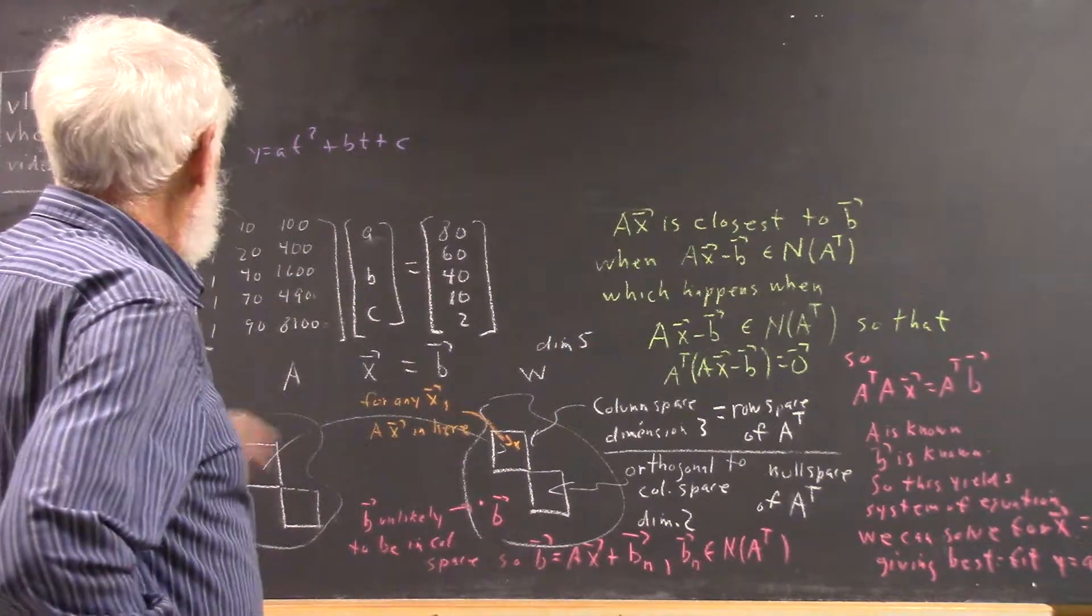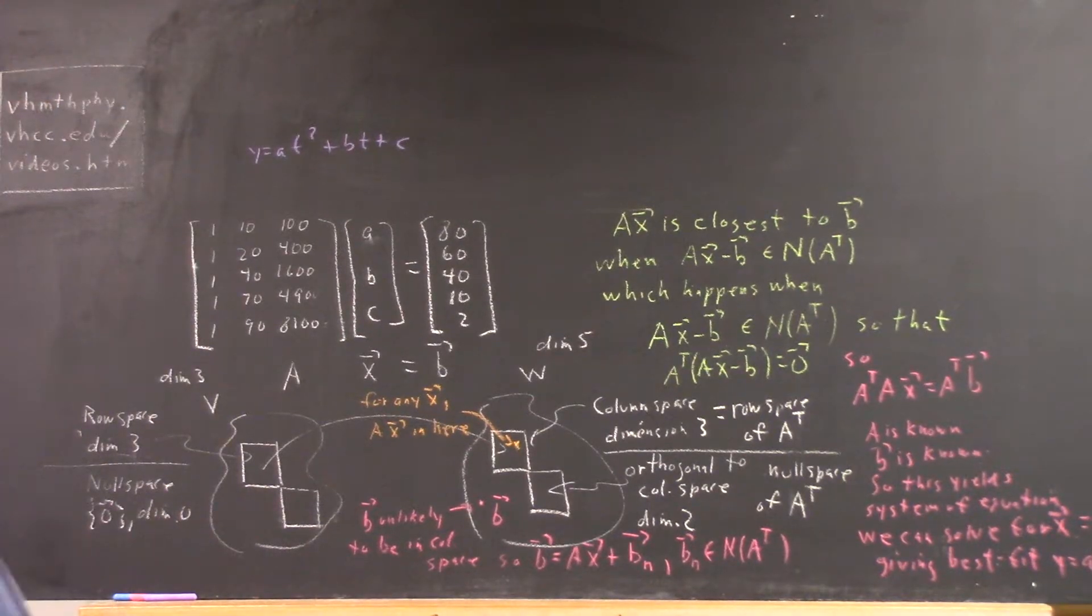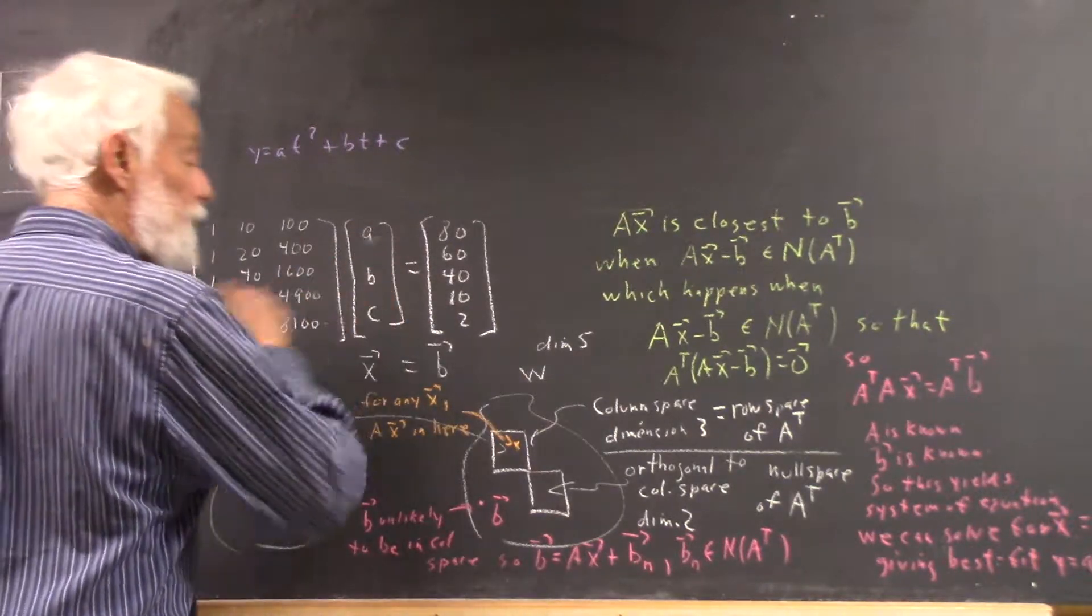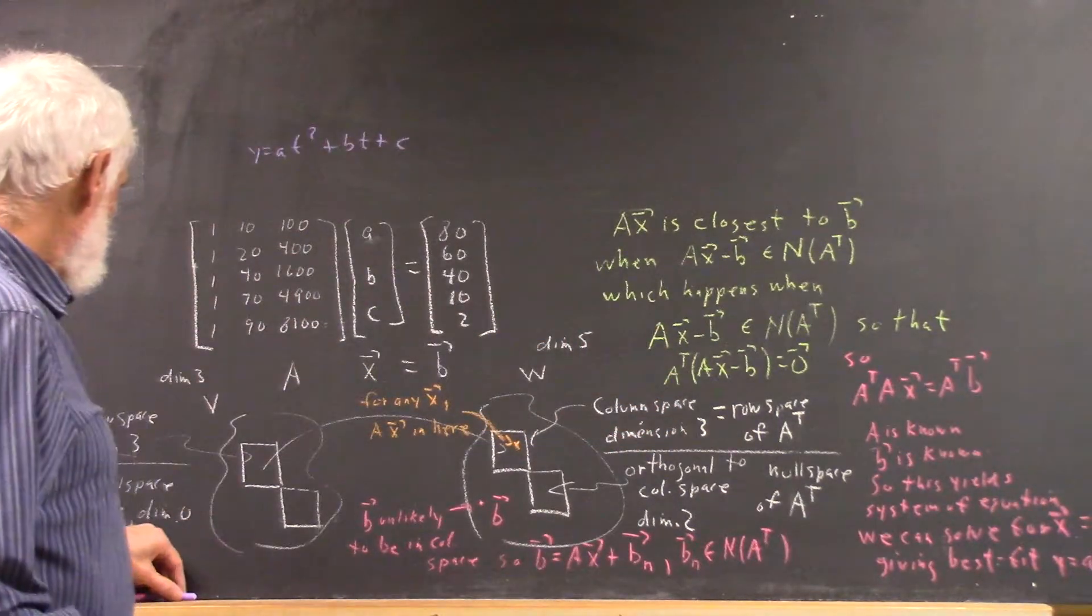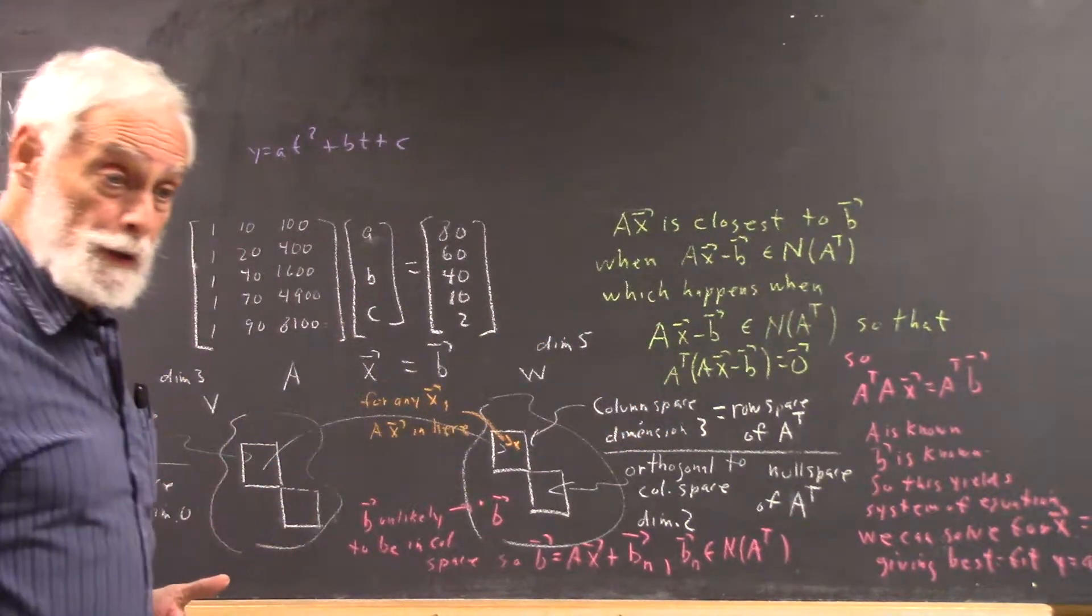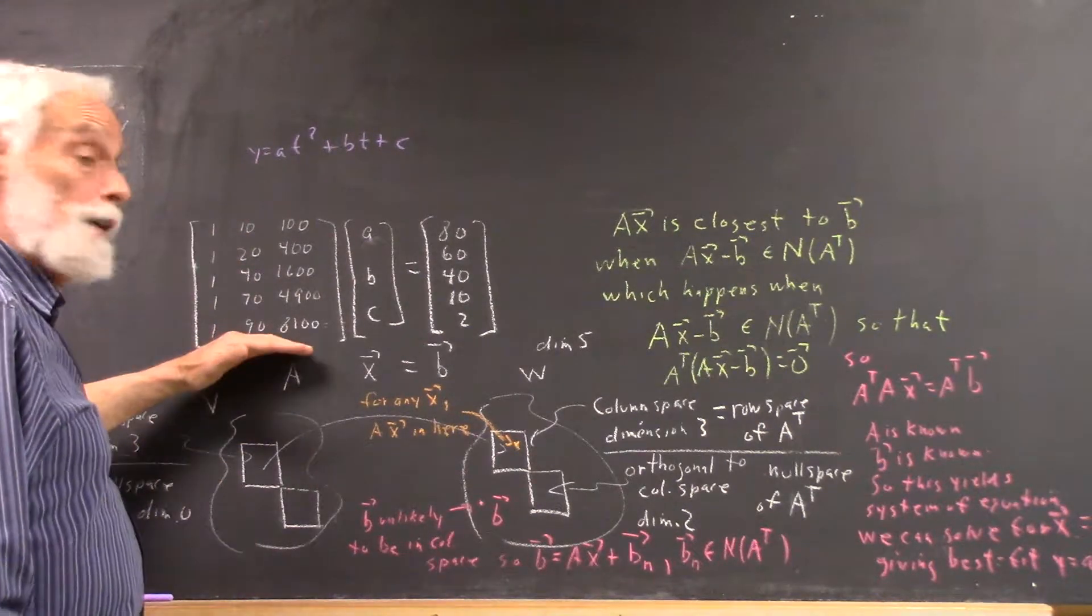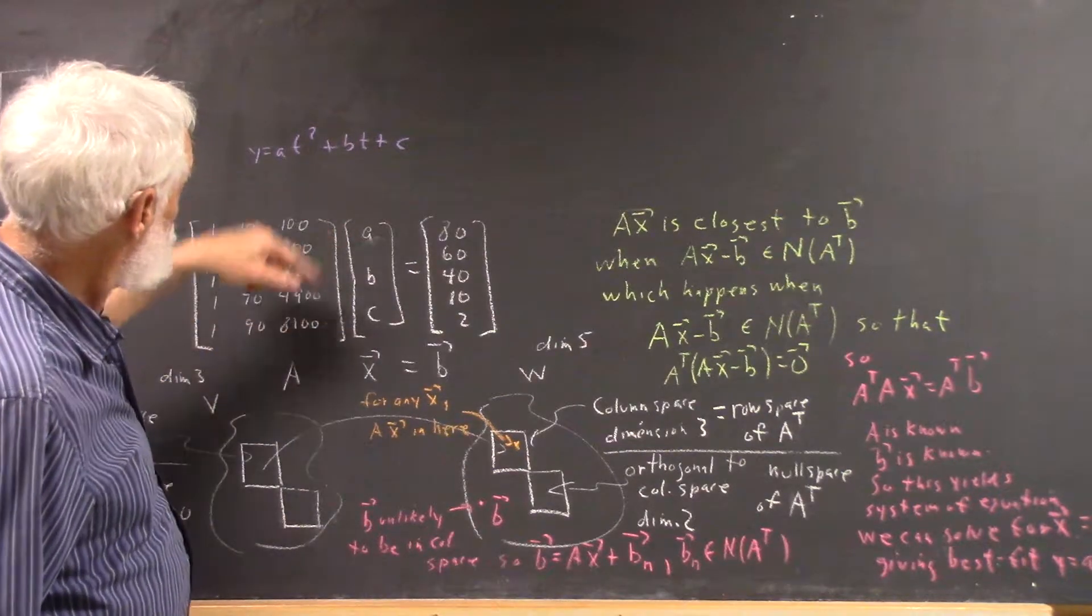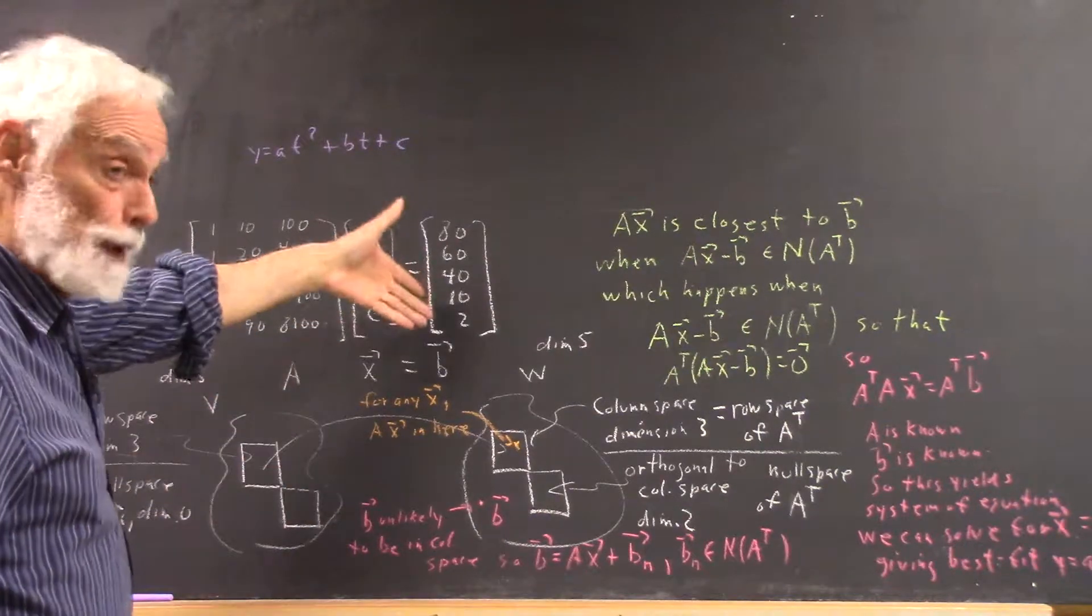We can't expect this matrix equation to have a unique solution, to even have a solution for A, B, and C. If we write this as an augmented matrix and try to reduce it, we see that we're going to get two rows of zeros when we try to reduce this part of the matrix, and there's no guarantee that we're going to get zeros on the other side of the equal sign when we reduce these numbers.